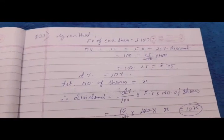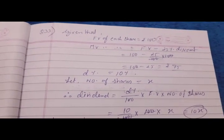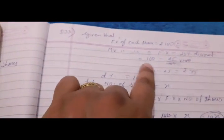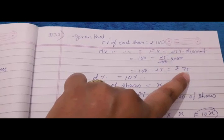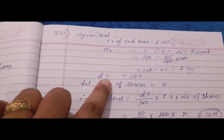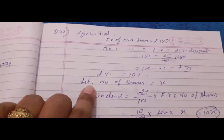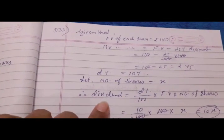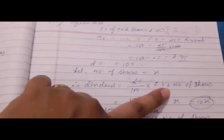Let's see how I have solved this. Given: face value of each share is rupees 100, market value is rupees 75. We verify: 100 minus 25% of 100 equals 100 minus 25 equals rupees 75. Dividend percent from the first share was 10%. Since the number of shares is not given, let us assume the number of shares is equal to x. The formula for dividend is: dividend = dividend percent upon 100, into face value, into number of shares.